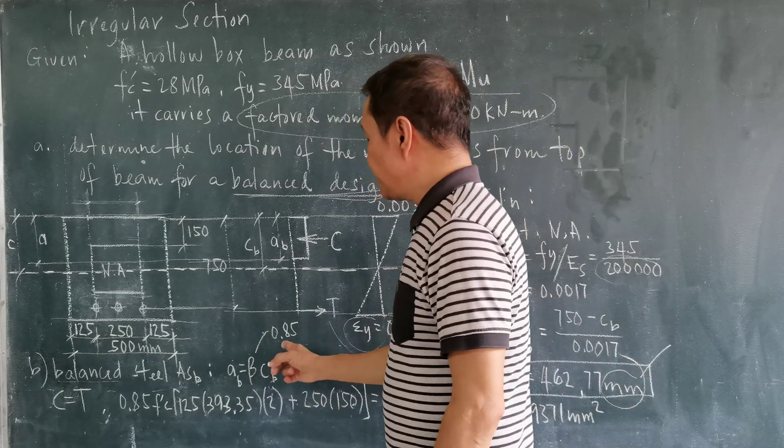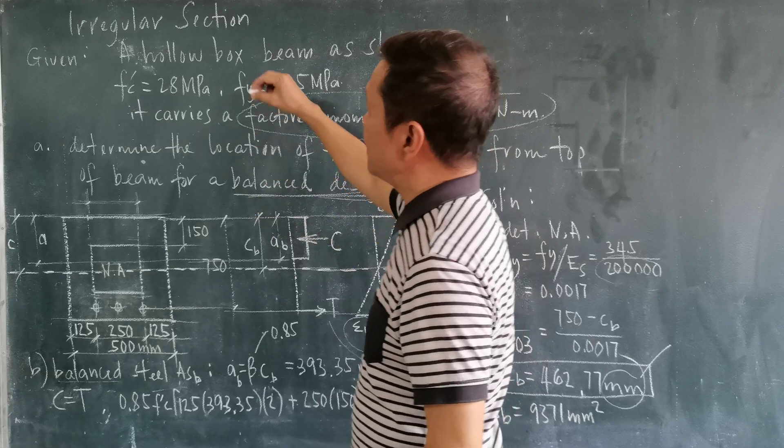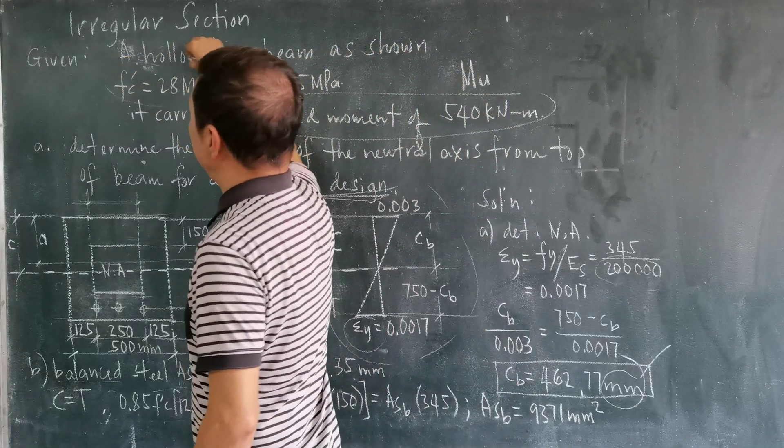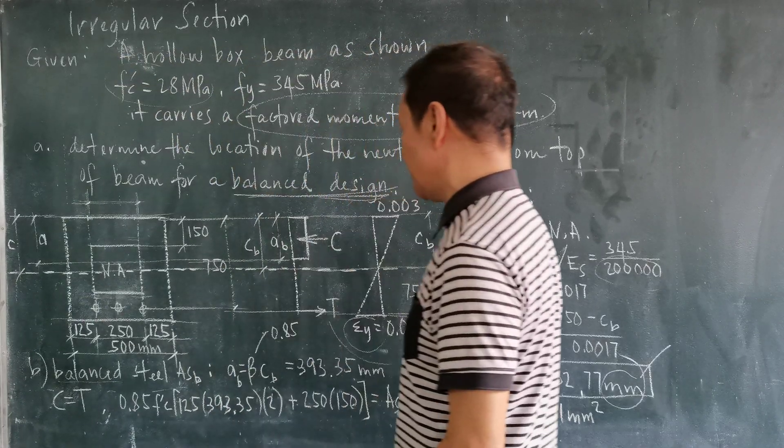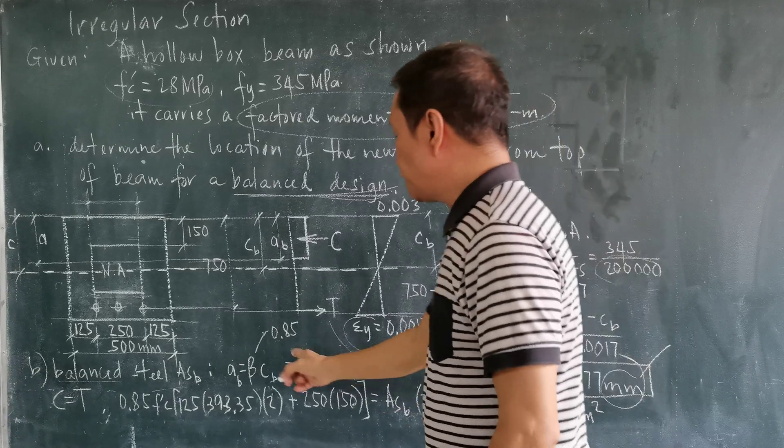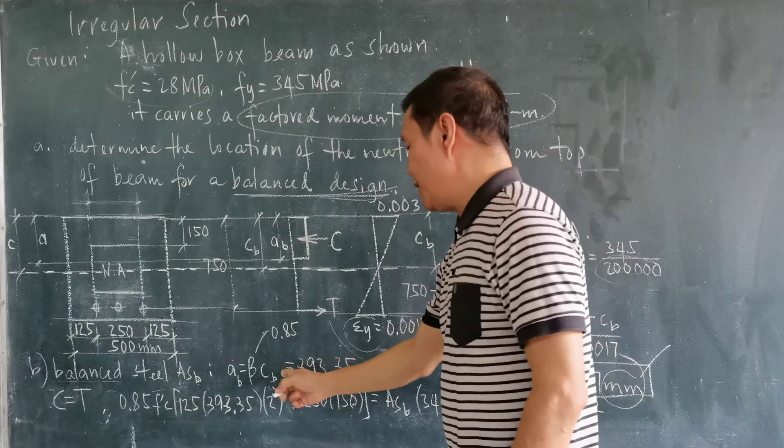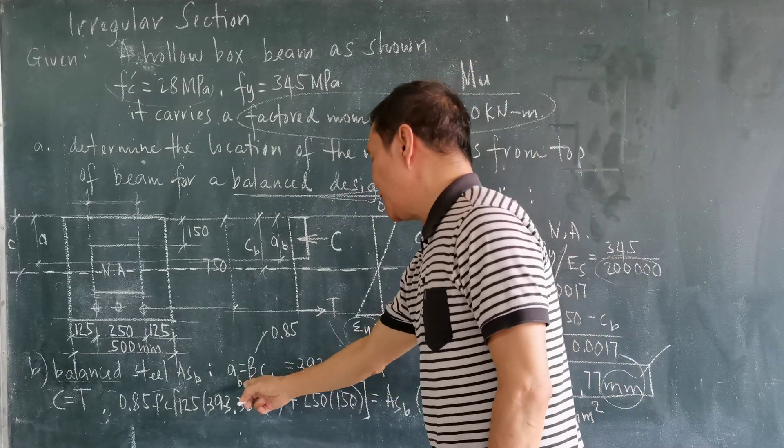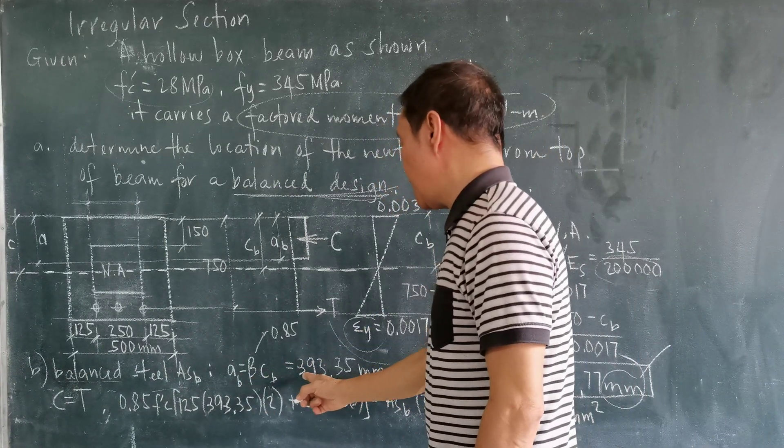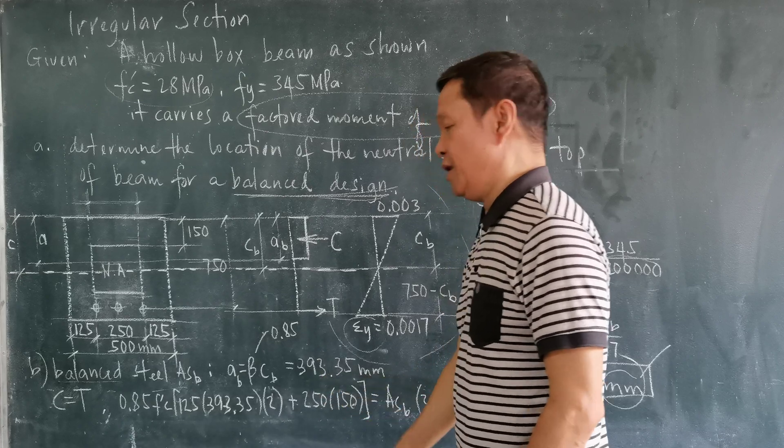Our beta is equal to 0.85 because our F prime C is only 28 MPa. After solving, C sub B is substituted here, we will get now the A at balanced design, which is equal to 393.35 millimeters.